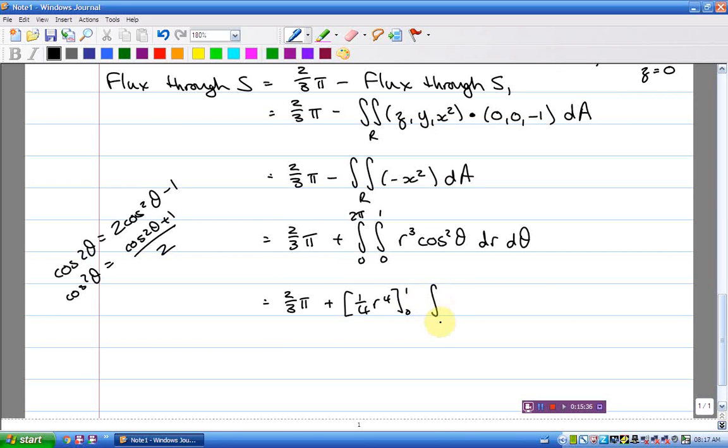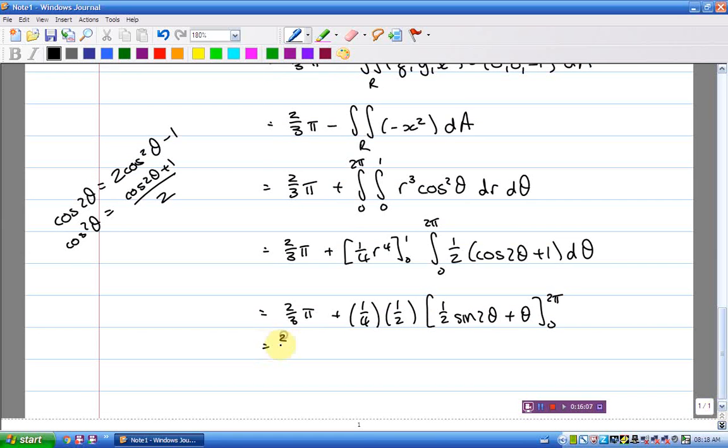So what's that cos squared? That's 0 to 2 pi of 1 half cos 2 theta plus 1 d theta. 2 thirds pi plus, what's that? That's a quarter. And there's the half. And then there's the, what'll that be? That'll be a half sine 2 theta plus theta from 0 to 2 pi. And of the four resulting terms, only one is non-zero. So that'll be a 2 pi. So that'll be a quarter pi. So I've got 2 thirds pi. I should be able to do this in my head. It'll be over 12. I'm tightening that by 4, so it's 8. I'm tightening that by 3, so it's 3. So it's 11 over 12 pi.